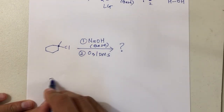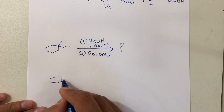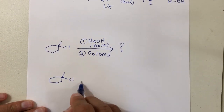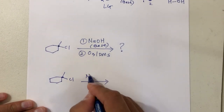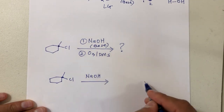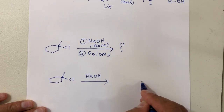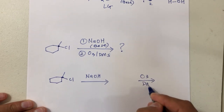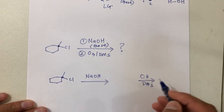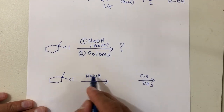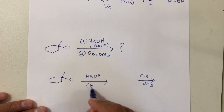Let's split it. Reaction number one will react with NaOH, and whatever product you get will react with O3 and DMS. NaOH is a base only, which means you are doing elimination.